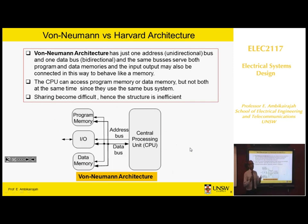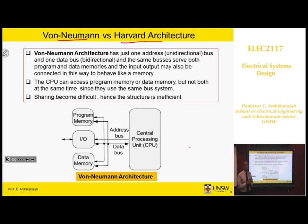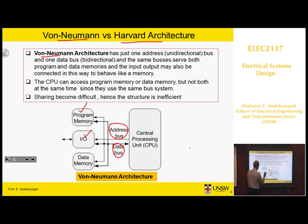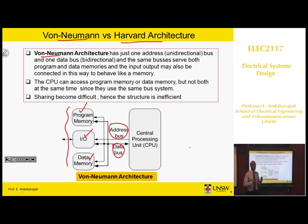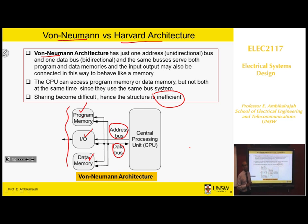We've covered the basic idea of memories, and we'll look at them further when we write programs. Now we look at architecture. We have Von Neumann architecture and Harvard architecture. In Von Neumann architecture, there is one address bus and one data bus. That means you can only address one memory component at a time — you cannot address all three simultaneously. The system is therefore slow and the structure becomes inefficient, especially at high speed.